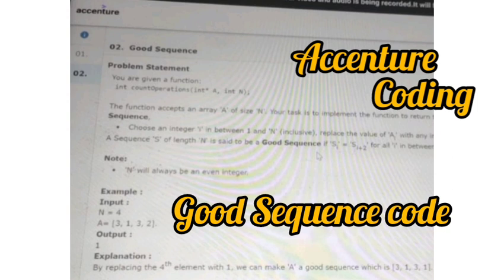They give us an example: input n equals 4, and the array a equals [3, 1, 3, 2]. The output should be 1. The explanation is: by replacing the fourth element with 1, we can make a good sequence which is [3, 1, 3, 1].